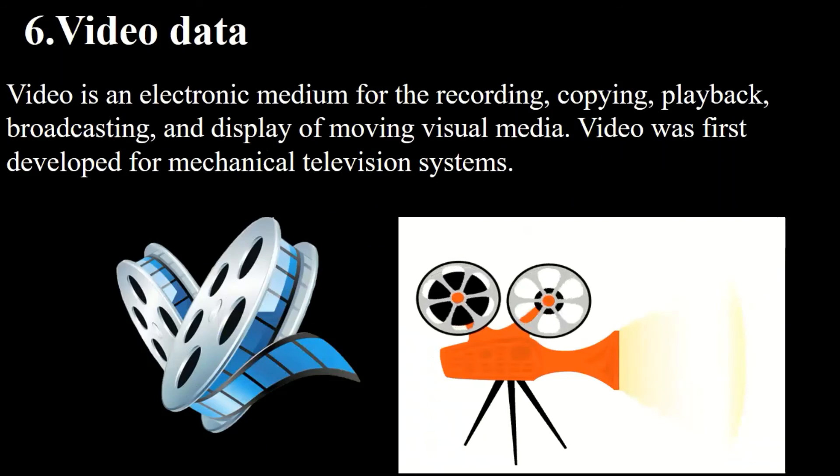Let's move to the next one. That one is last. That is called video data. Video is an electronic medium for the recording, copying, playback, broadcasting, and display of moving visual media or visual images. Moving of visual images is called video. Video was first developed for mechanical television systems.